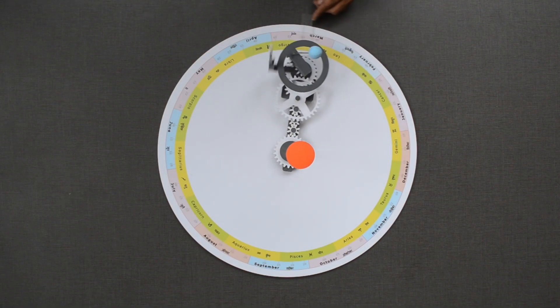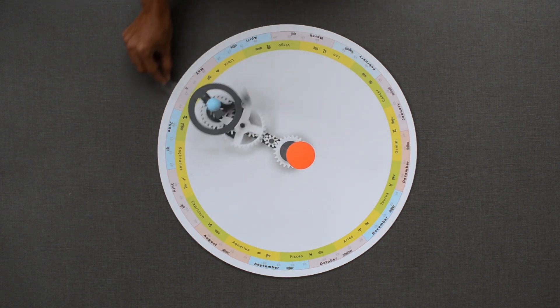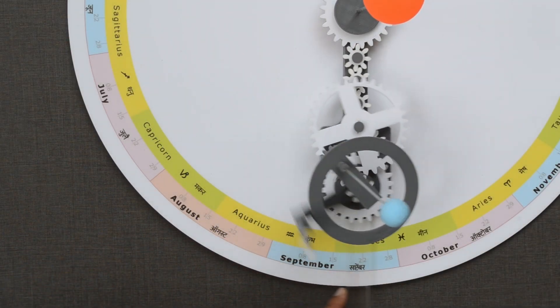One full rotation around the Sun completes one year. In the same period, Moon completes 12.37 rotations.